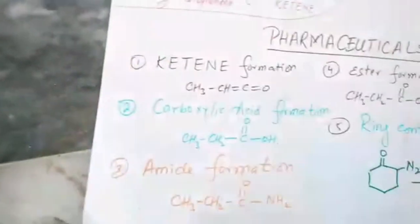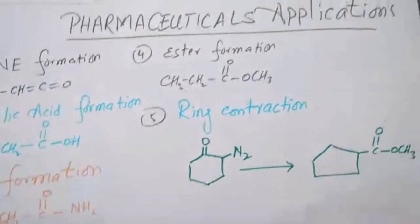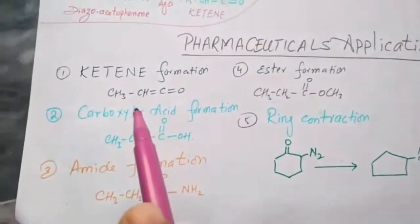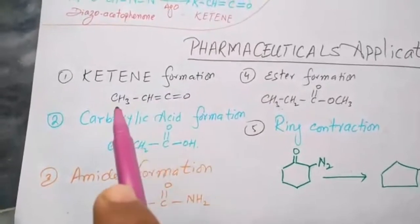So we can synthesize isomeric forms with the help of Wolff rearrangement. This is the merit of this second pathway.